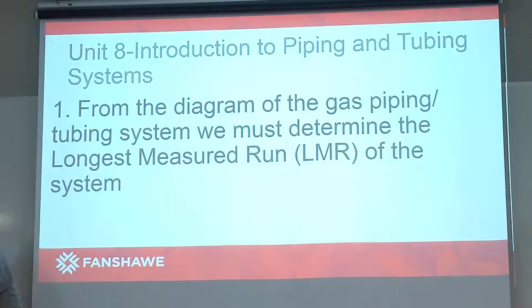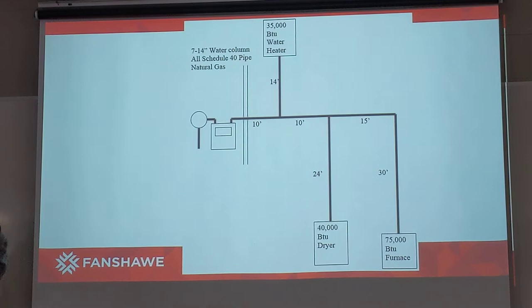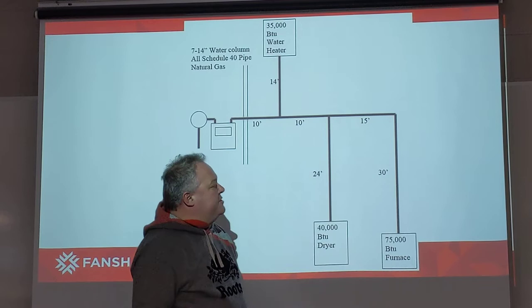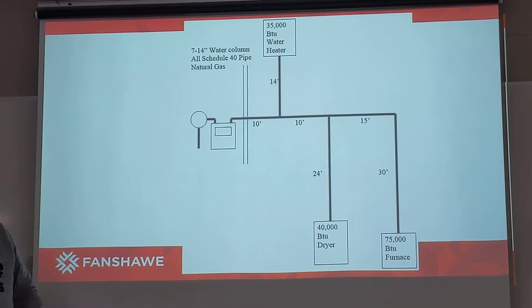Starting on a very simplified diagram, the first step we need to determine what the longest measured run, or the LMR, is in the application. Looking at the diagram, we can see we have a 75,000 BTU furnace down at the end. We have 30 feet of pipe, 15 feet of pipe, 10 feet of pipe, and 10 feet of pipe — that adds up to 65 feet. That's the longest measured run in this example.